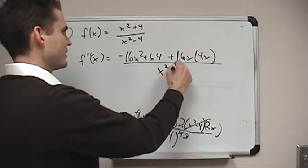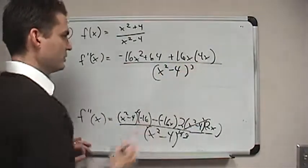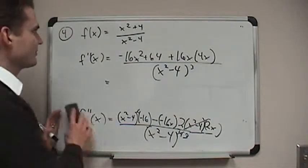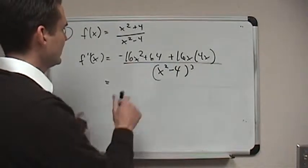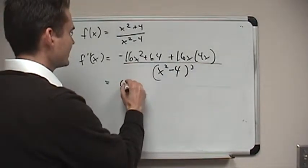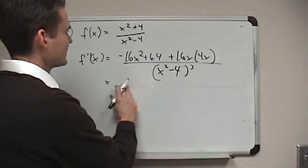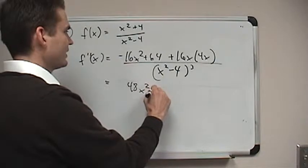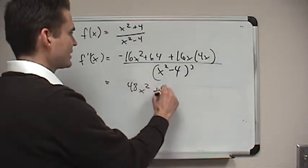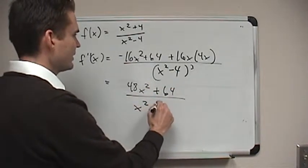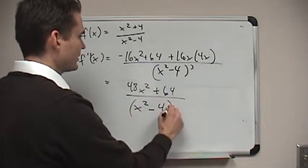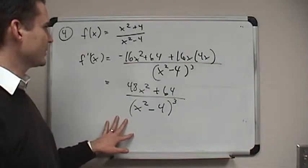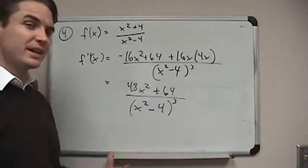That's all over (x squared minus 4) cubed. Let's see what we've got here. We've got 64 minus 16, so it's 48x squared plus 64, all over (x squared minus 4) to the power of 3. So this is our second derivative.